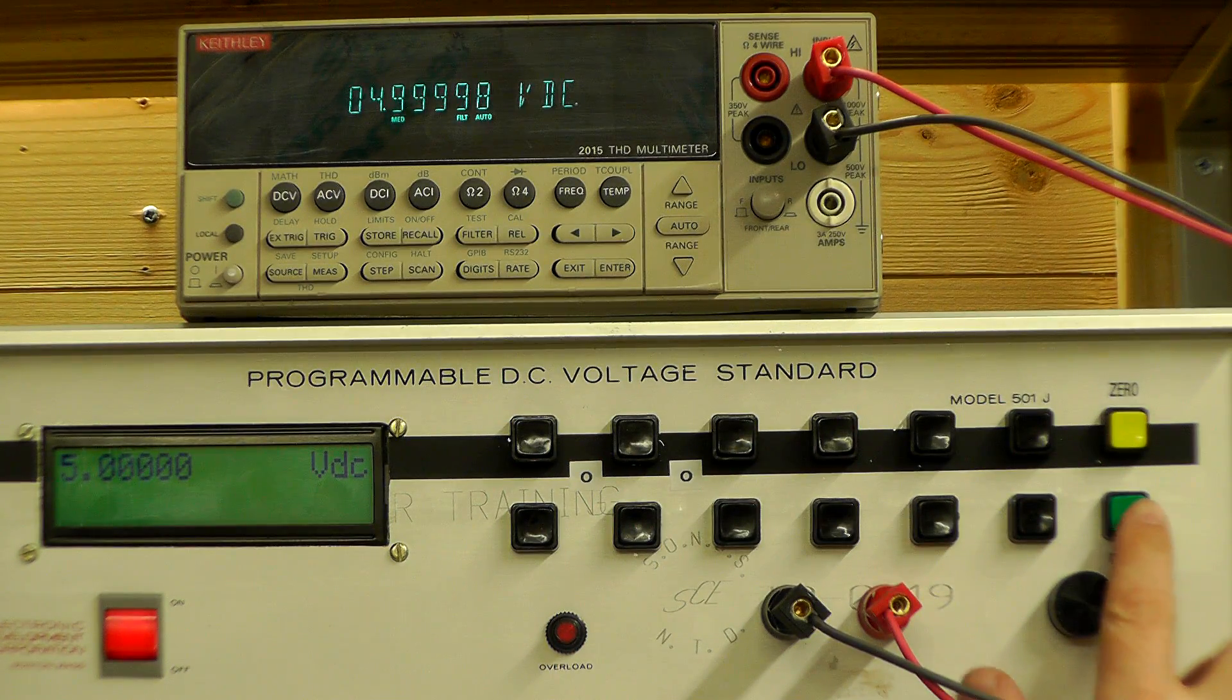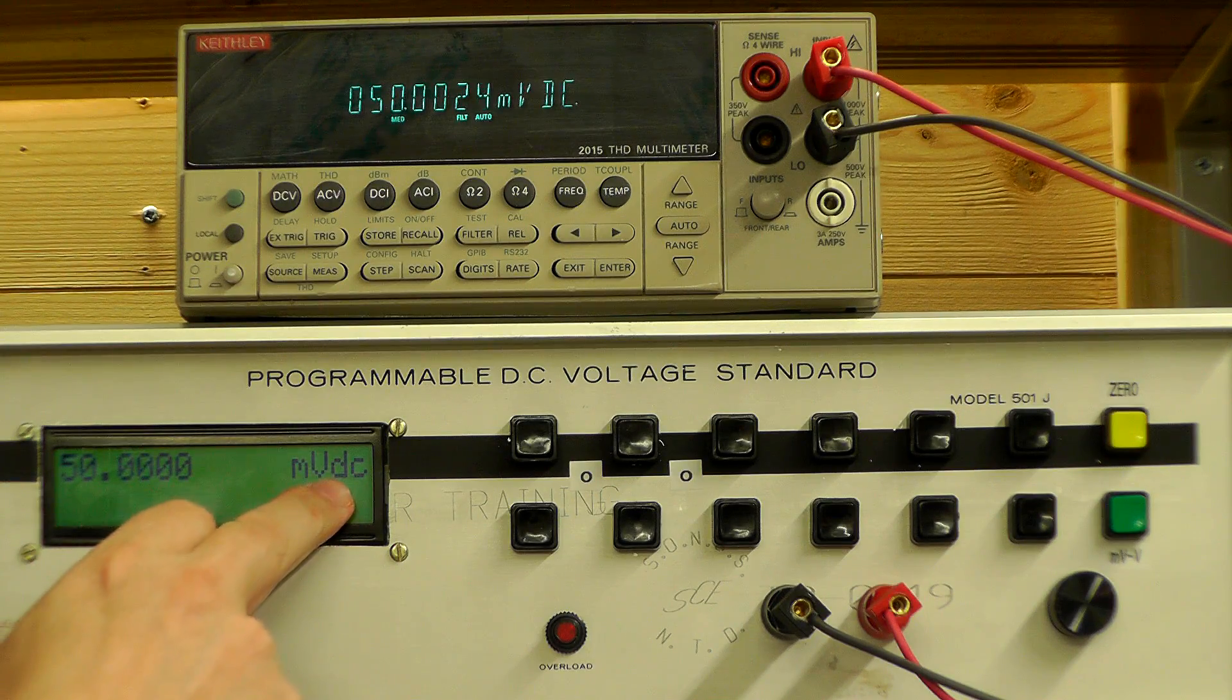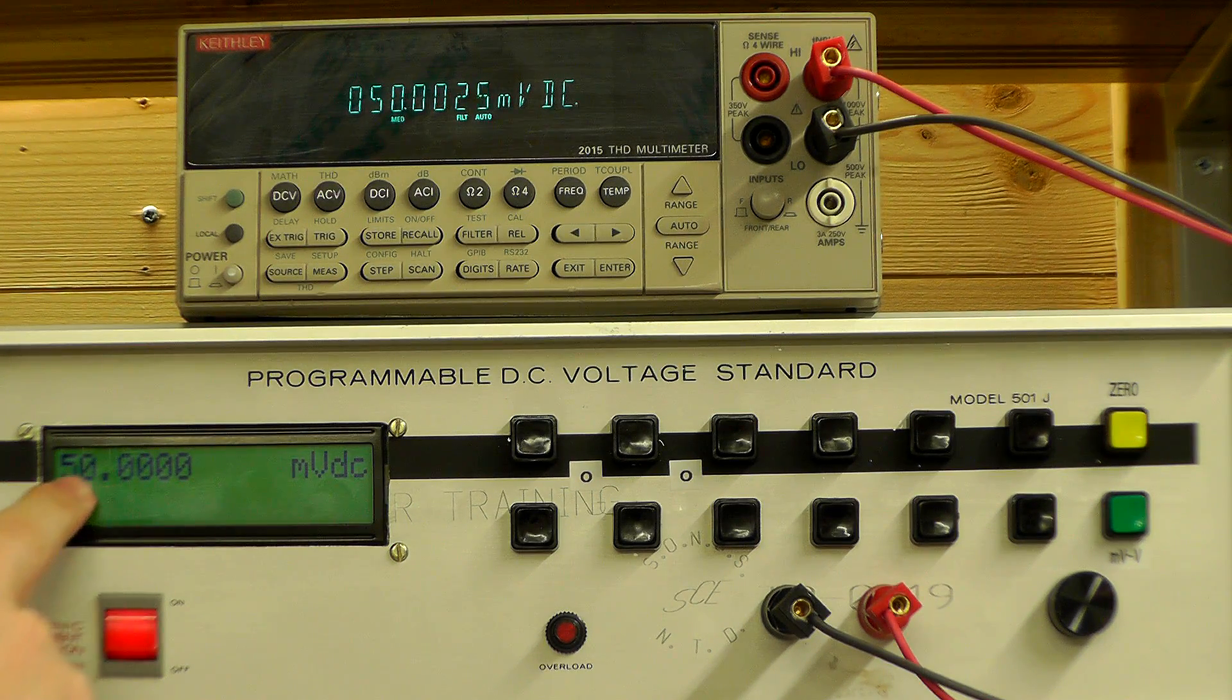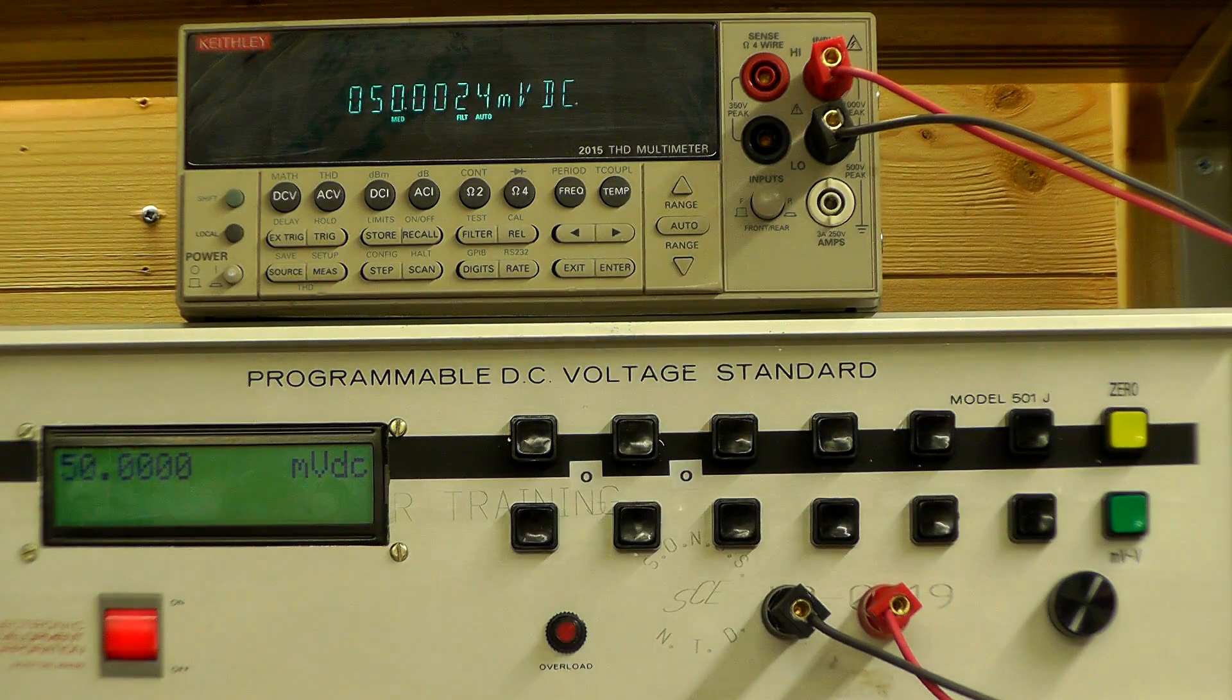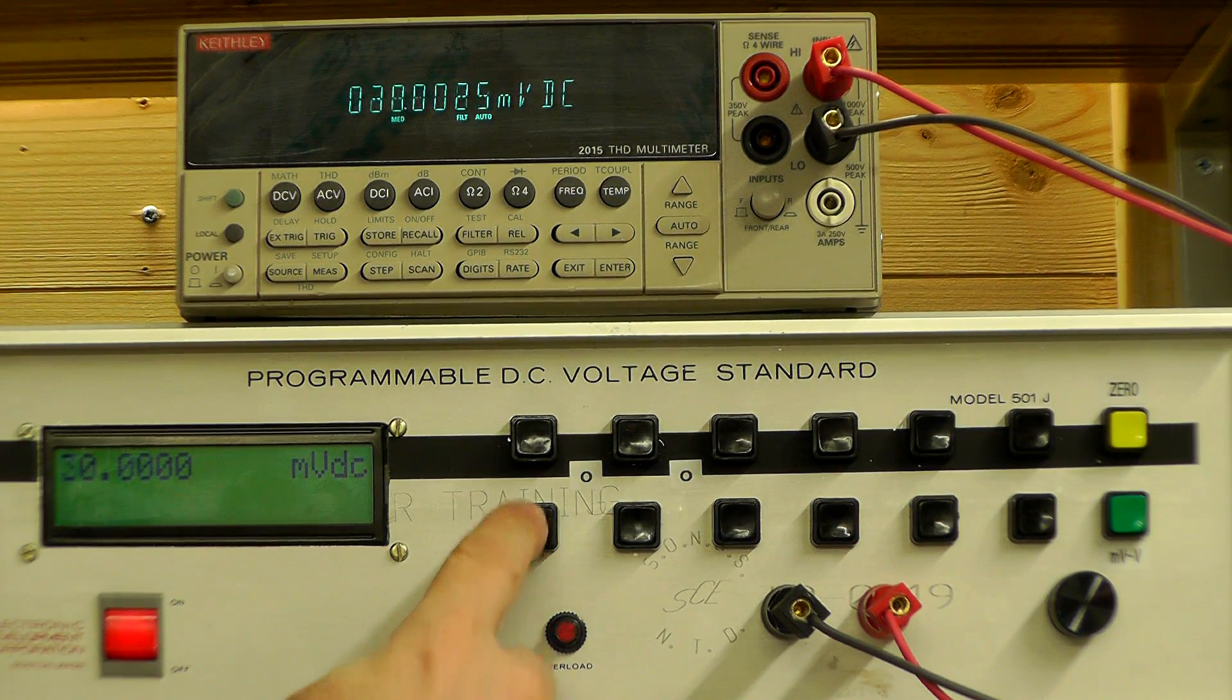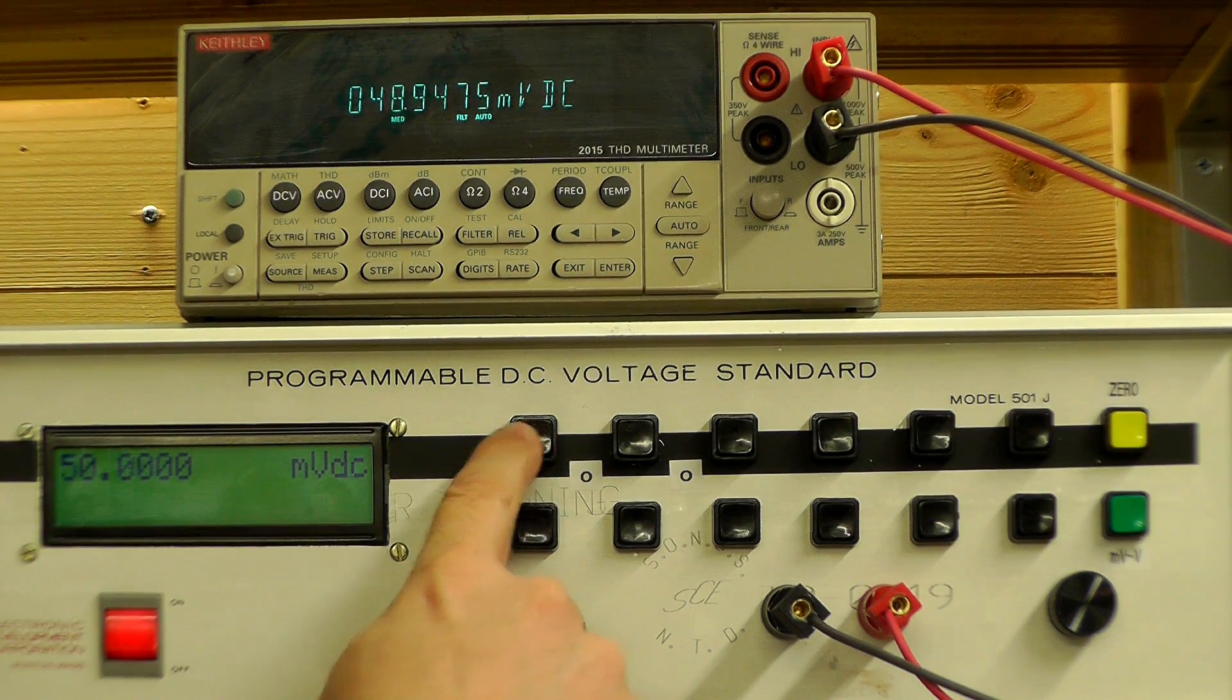And if I hit the push button here, we're in millivolt mode and you can see the decimal point shifted there. And that's again reading from the up down switches. Obviously I can go and press the push button here and you'll see the display changing there for the most significant digit.